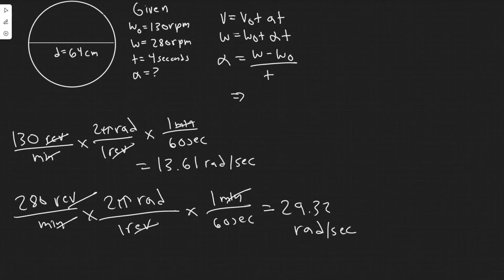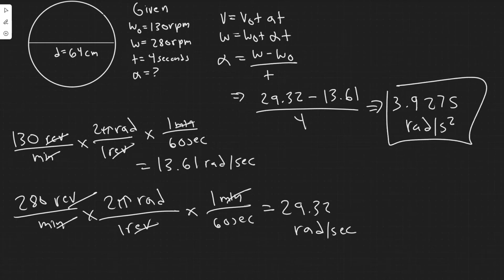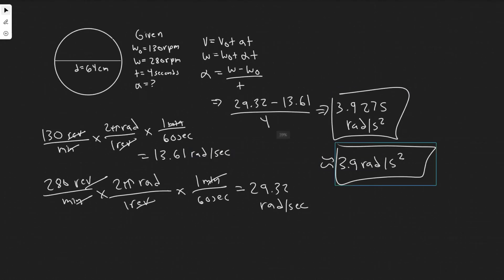Plugging in: the final angular velocity is 29.32 minus the initial 13.61, divided by the time of four seconds. That gives 3.9275 radians per second squared — that's the unit for angular acceleration. You can round it to 3.9 radians per second squared, however your teacher wants. That's the answer to Part A.